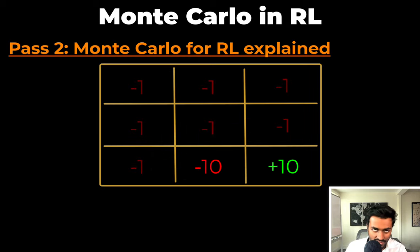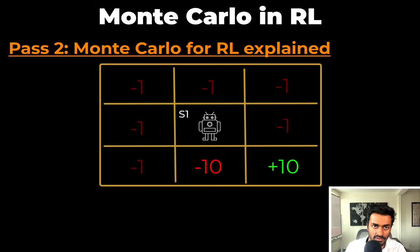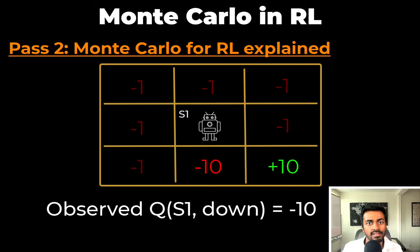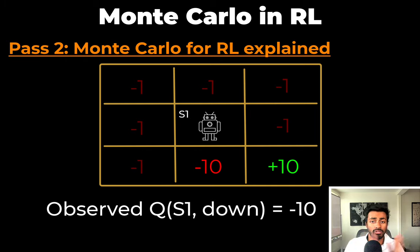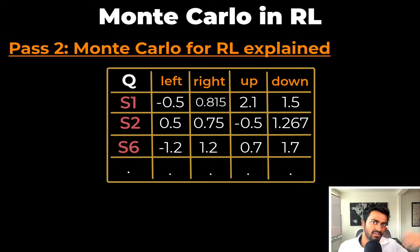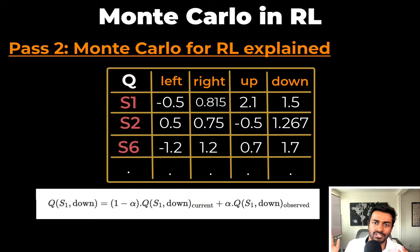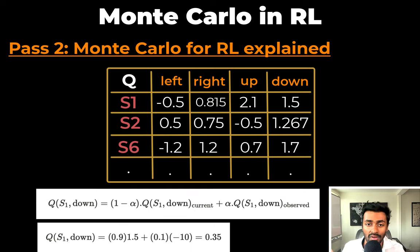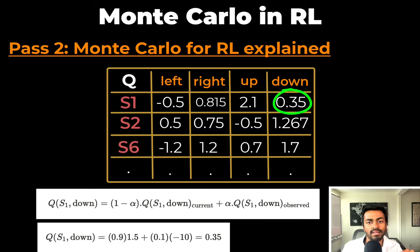In the first-from-last state Frank just visited, it was in state S1. The total future reward going down is negative 10. So Q(S1, down) is negative 10. But we want Frank to learn from its mistakes, so we don't update too harshly — we update the Q-value such that it takes into account previous knowledge but also this new information, assuming a weight of 0.1. We then continuously backtrack to update the other Q-values in this episode.